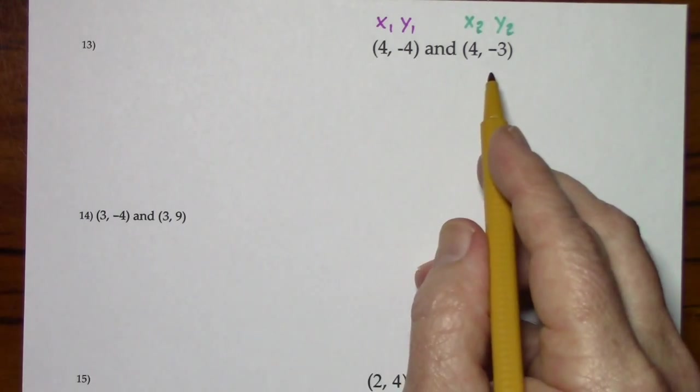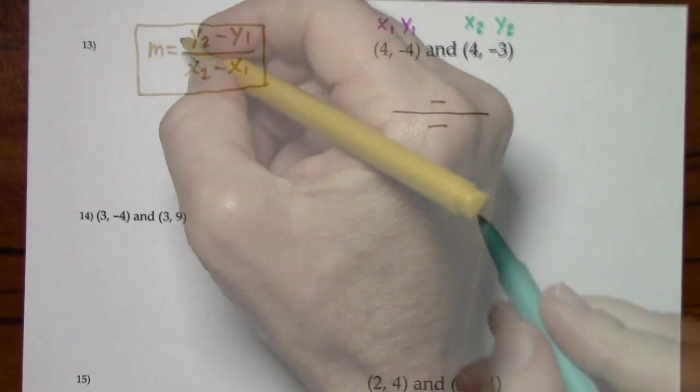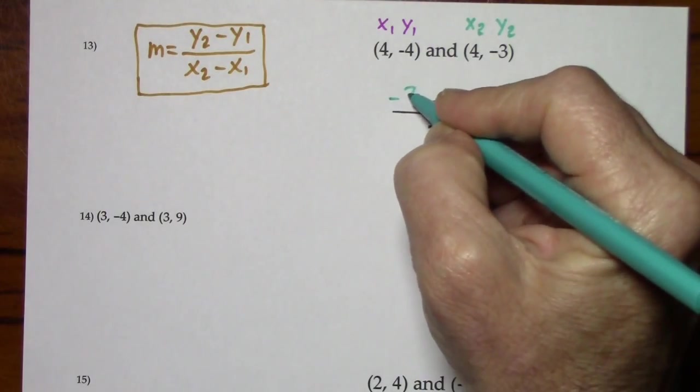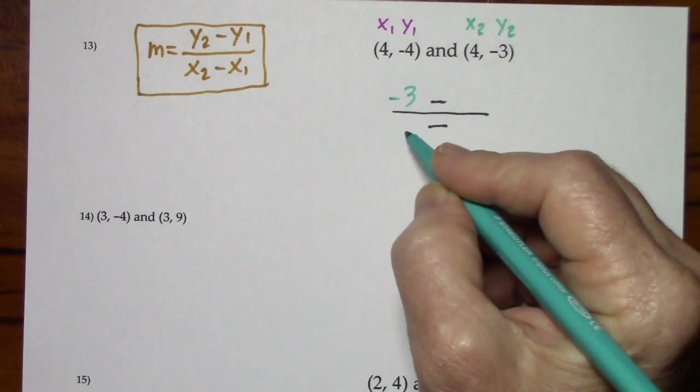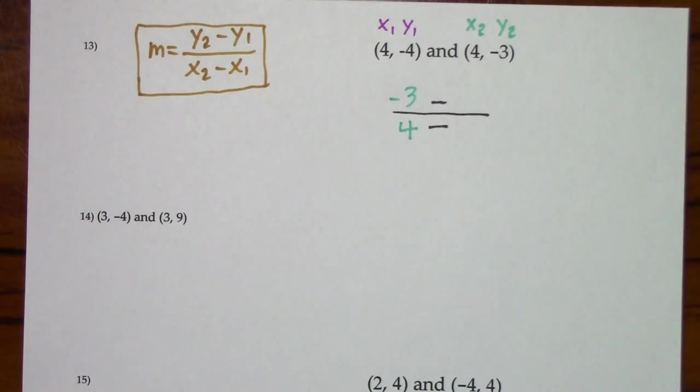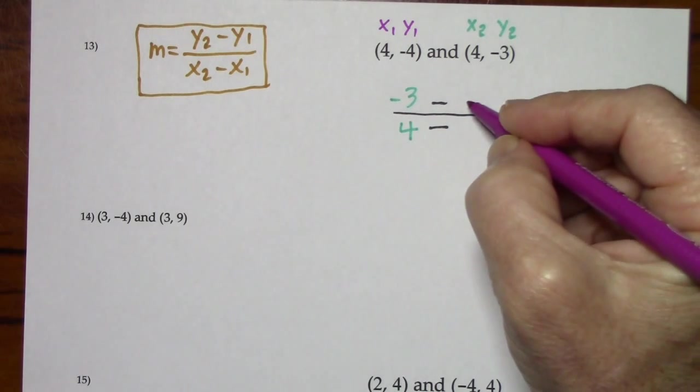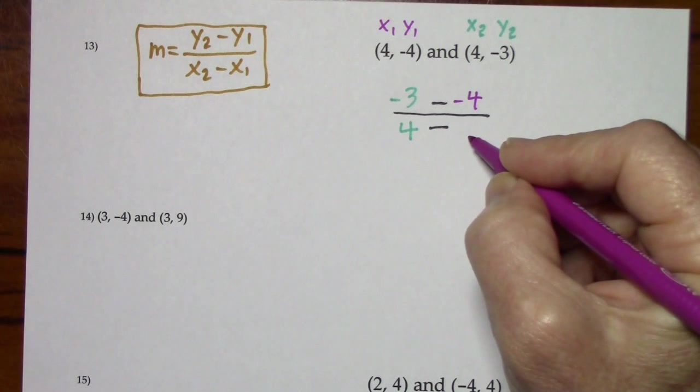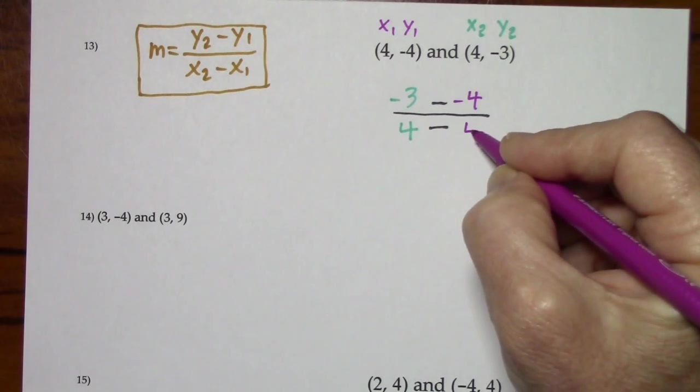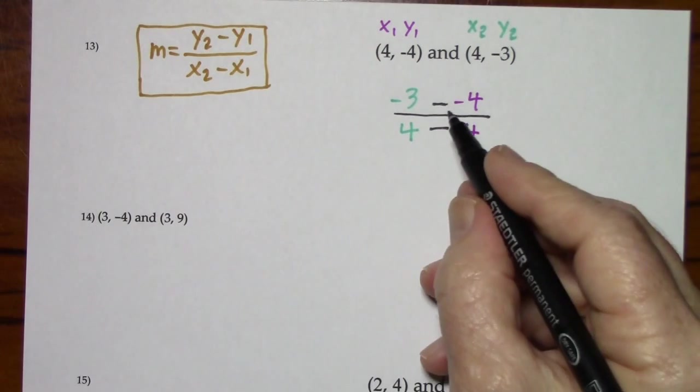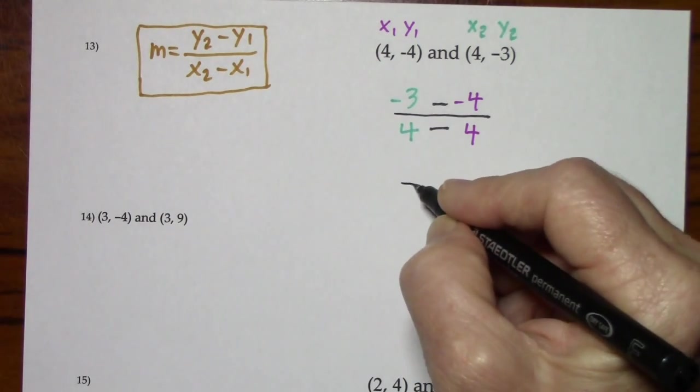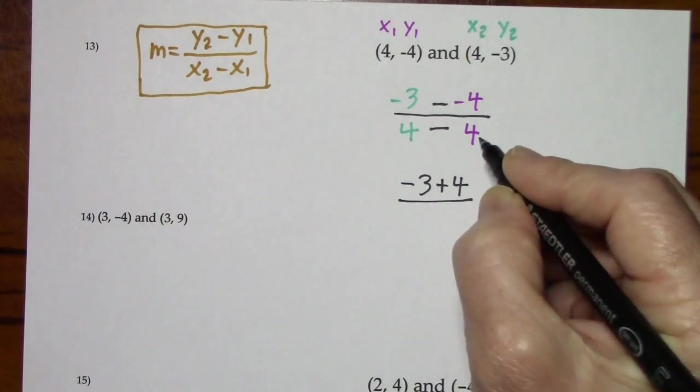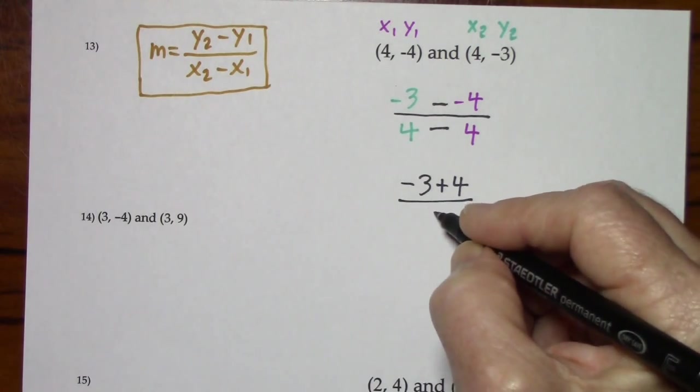Again, we're to find the slope that goes through these two points. Y sub 2, x sub 2, y sub 1, x sub 1. I'll clean up the numerator. The denominator, 4 minus 4, is 0. I don't have to go any further.